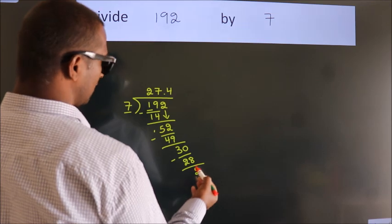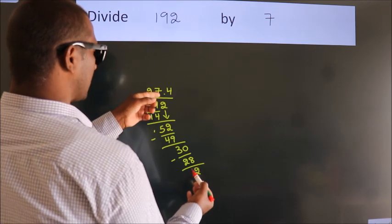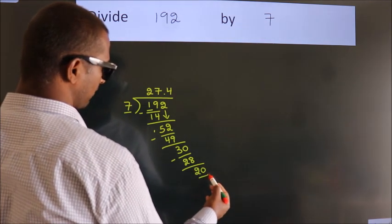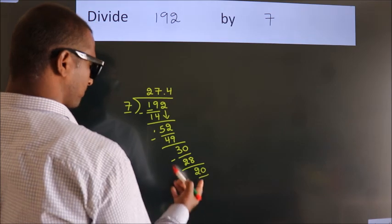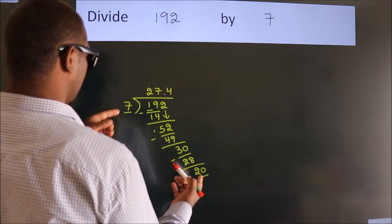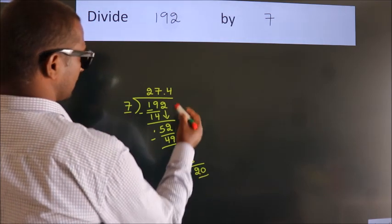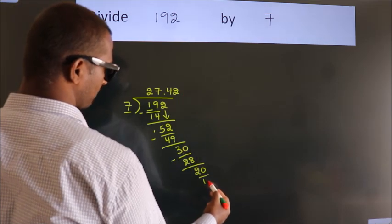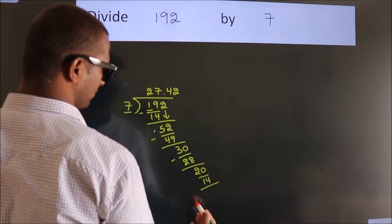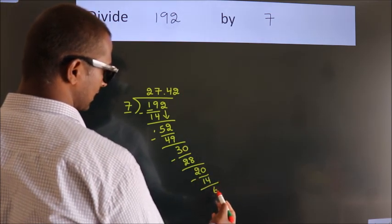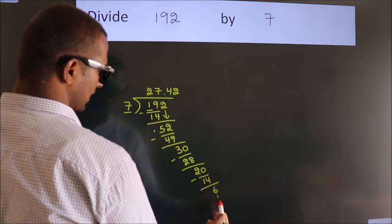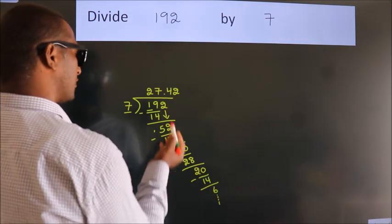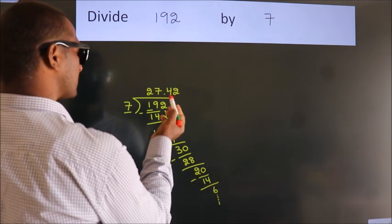After this we already have the decimal, so directly take 0, making 20. A number close to 20 in the 7 table is 7 twos 14. Now we subtract. We get 6, and the division continues. It is enough if we do up to 2 decimal places.